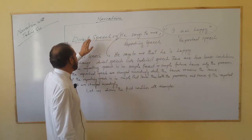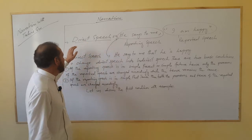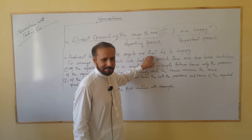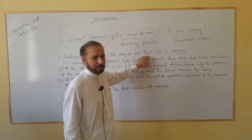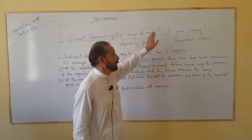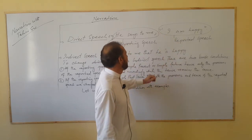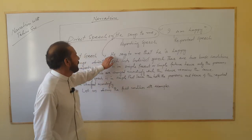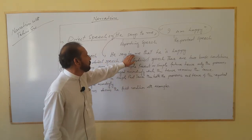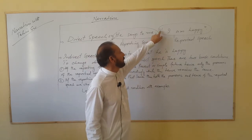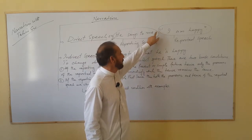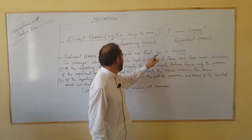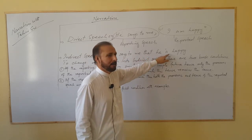To change direct speech into indirect speech, we need a conjunction — mostly 'that' — when the reported speech is an affirmative sentence. In indirect speech we say: remove the commas and inverted commas and use 'that.' For example, 'He says to me that he is happy.'